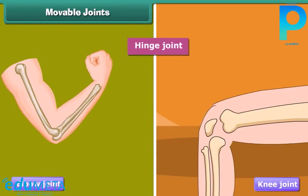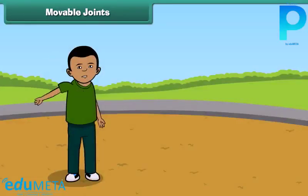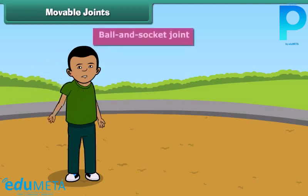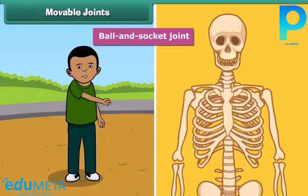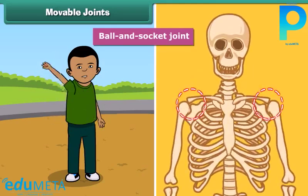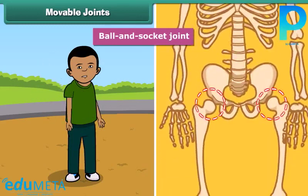For example, elbow joint and knee joint. The joints which join the bones to make circular movement possible are called ball and socket joints. For example, the bone in the upper arm is fitted to the bone in the shoulder by a ball and socket joint. Similarly, the thigh bone is fitted to the hip bone by a ball and socket joint.